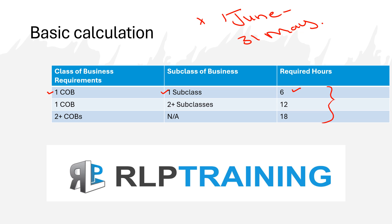If our rep, KI, or FSB is appointed or approved under one class of business and two subclasses — so short-term insurance, personal lines, subcategory A1 and A2 — that's 12 hours. And if our rep, KI, or FSB is approved or appointed for two or more classes of business — so appointed under short-term insurance personal lines and short-term insurance commercial lines, regardless of how many product categories — it will be 18 hours.